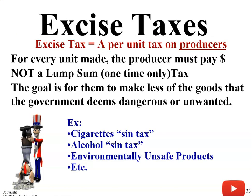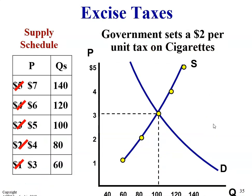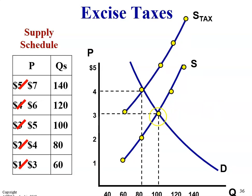An excise tax is a tax on a specific good, sometimes called sin taxes — things like gasoline, cigarettes, and alcohol. So let's say the government places a $2 per unit tax on cigarettes. What that's going to do is shift the supply curve to the left. The tax is represented as the difference between the original equilibrium and where the new supply curve sits, up at $5.